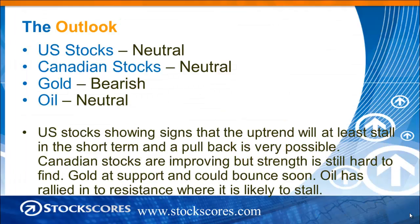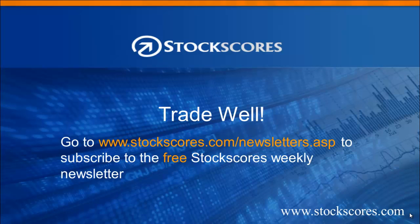My outlook: U.S. stocks neutral, as they're getting a little toppy. Canadian stocks neutral, although weaker than the U.S. market but also not as far to fall from a risk standpoint. Gold bearish, but has some reason to think it could hold support. Oil I am neutral on. U.S. stocks are showing signs the upward trend will at least stall in the short term and a pullback is very possible. Canadian stocks are improving but strength is still hard to find. Gold is at support and could bounce soon. Oil has rallied into resistance where it is likely to stall. Have a great week in the market and trade well.